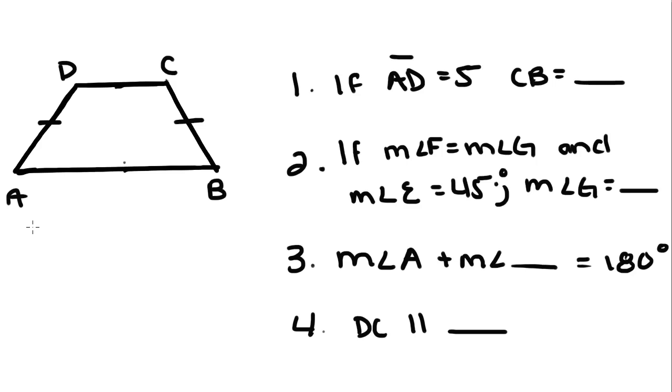So if AD is equal to 5, CB has to equal, well, this is an isosceles trapezoid because the legs are congruent. So if the legs are congruent, that means they have equal length. So if AD equals 5, then CB also has to equal 5.